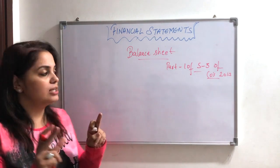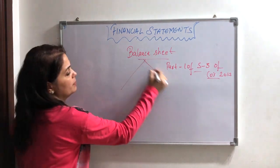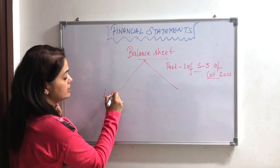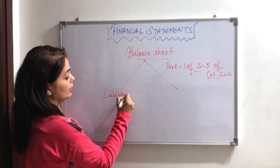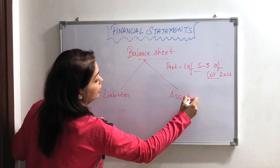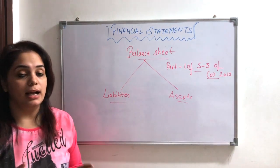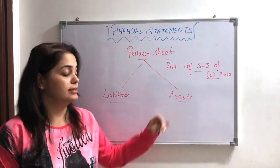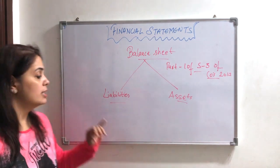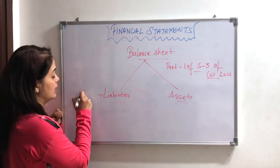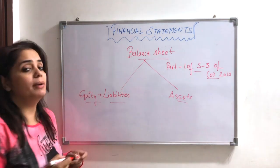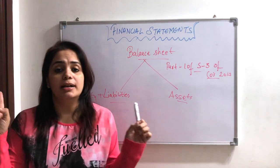So the first thing you have to know about the balance sheet is that we have two things: liabilities and assets. But you have to know that along with liabilities, we also have equity. Equity means the capital that a company holds. With liabilities, we have capital, which is the fund provided by the owner for the purpose of running the business.